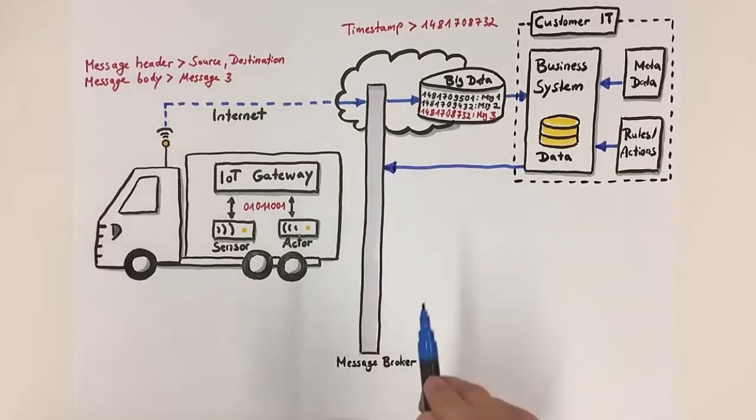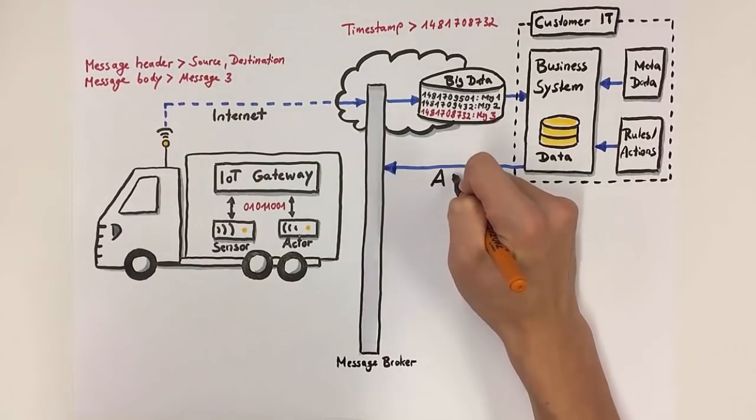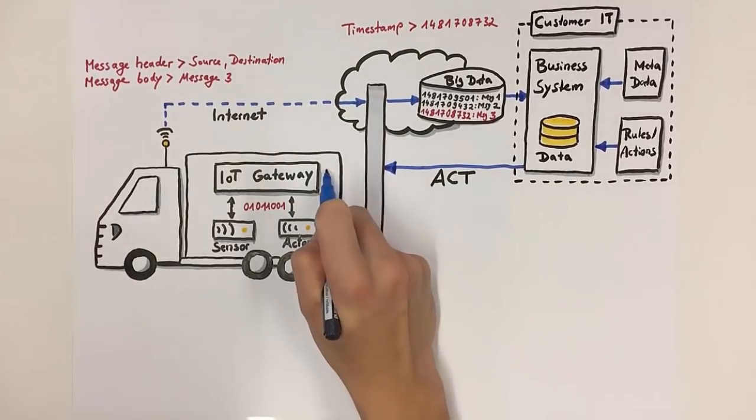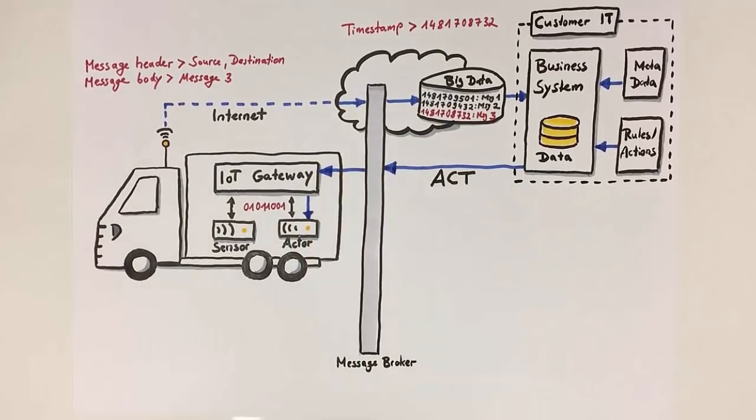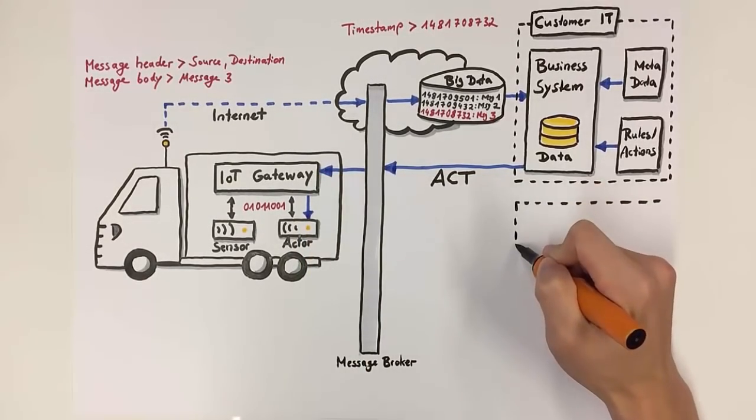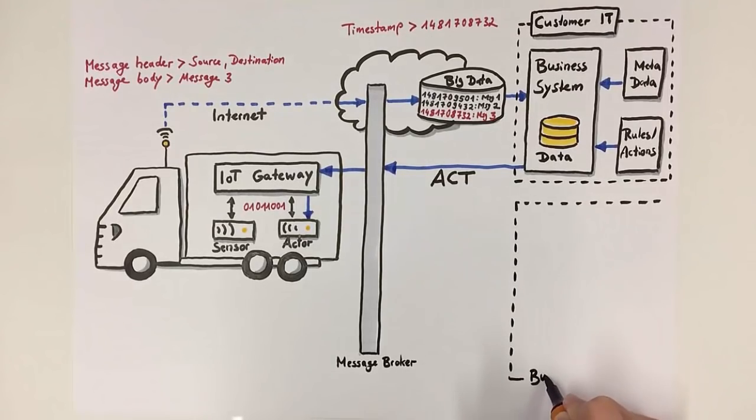These rules and actions can provide a relevant environment to enable the business systems to autonomously act and control actors. In our example, the business system might regulate the temperature based on the items that are loaded in the truck.